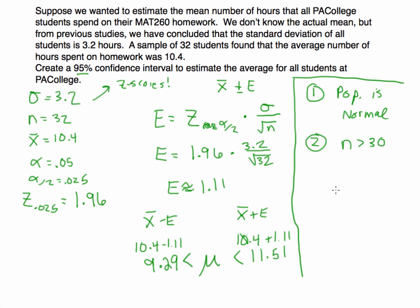So one of those two needs to be met. In this example, we don't know anything about the population in terms of its distribution, but we do have a sample of 32, so it's met.